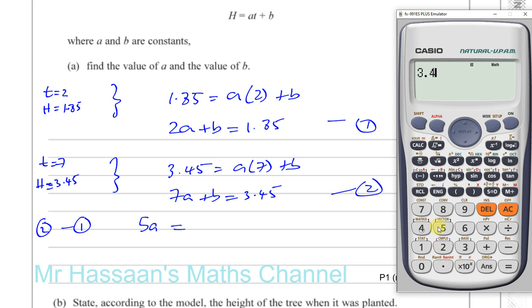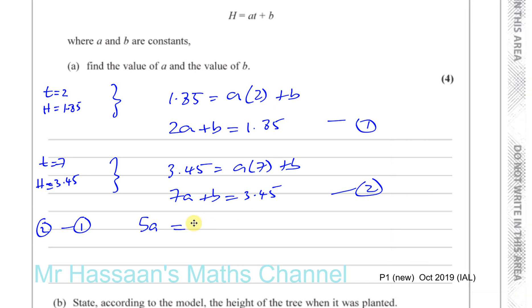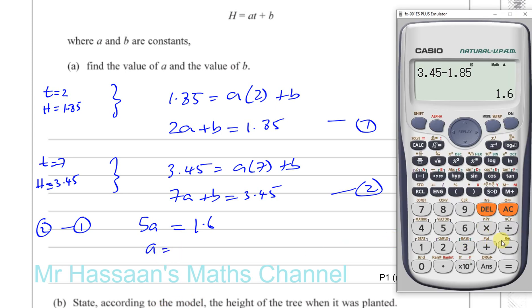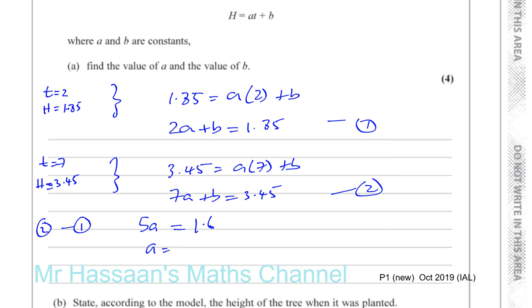3.45 minus 1.85 gives us 1.6. So 5a = 1.6, which means a = 1.6 divided by 5. Dividing that by 5 gives 0.32, so a = 0.32.